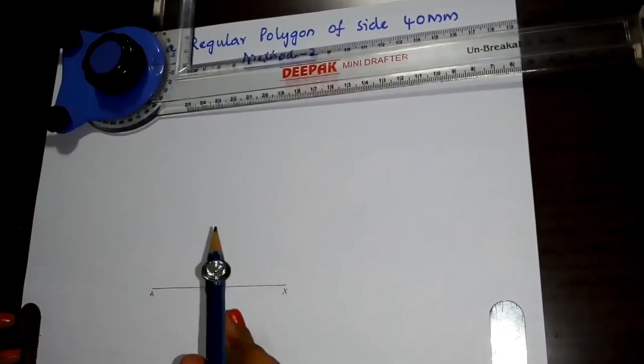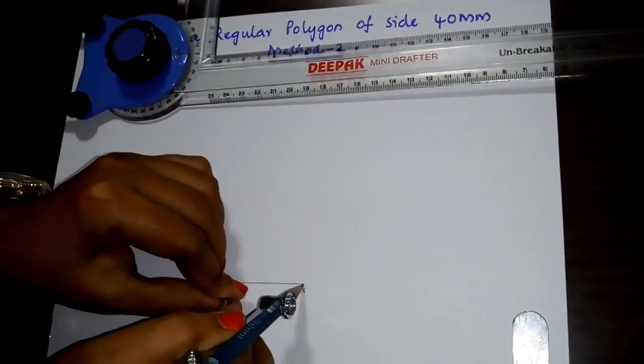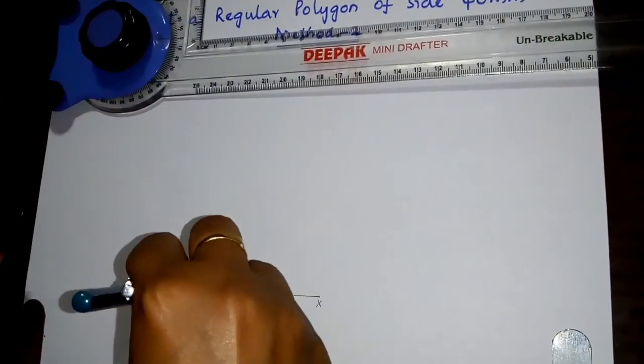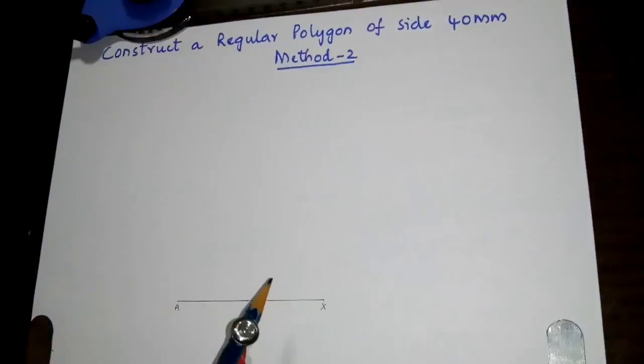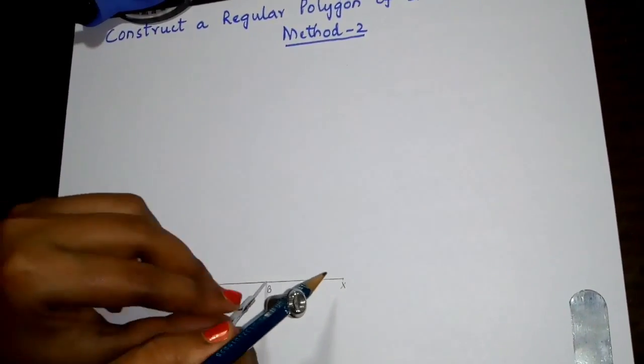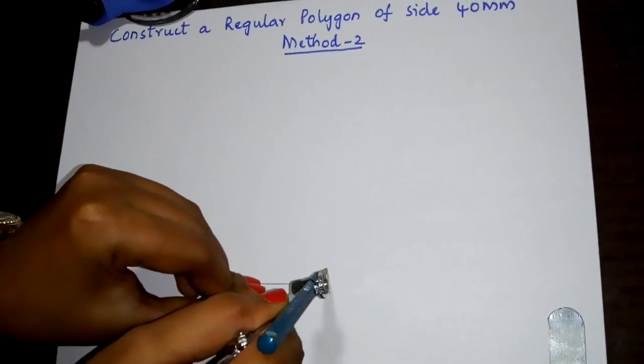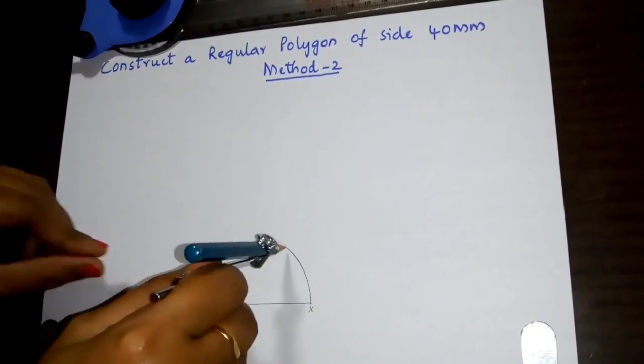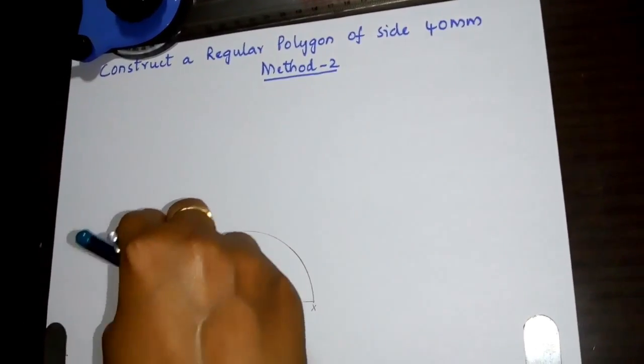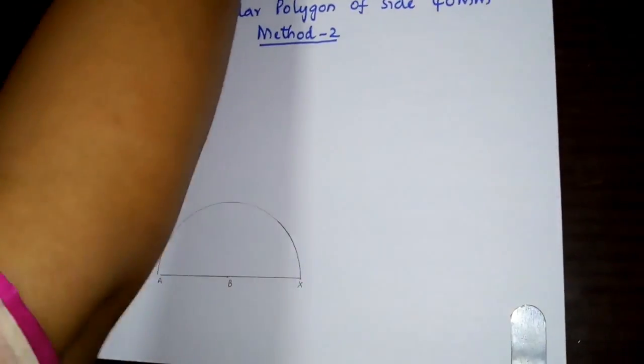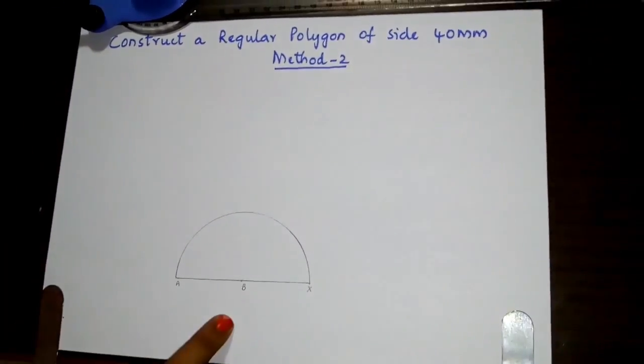Now, taking B as center and BX as radius, draw a semicircle which touches A.